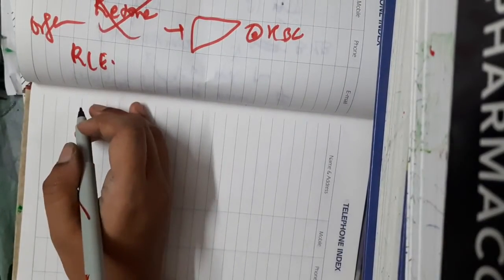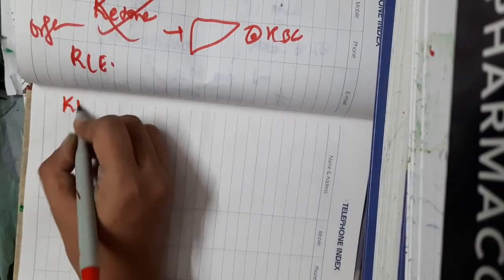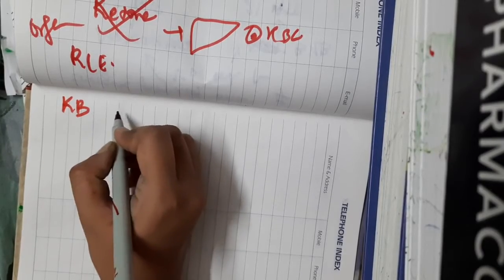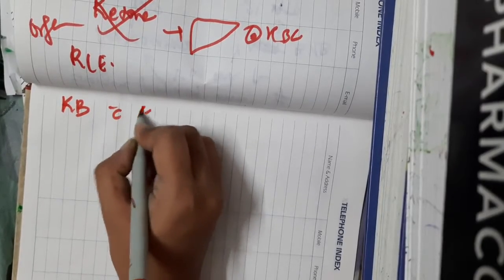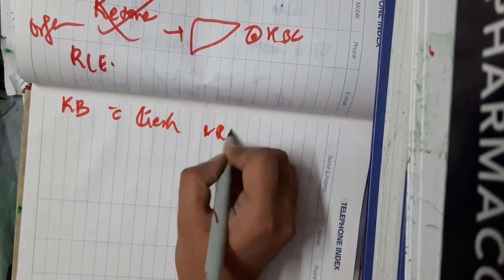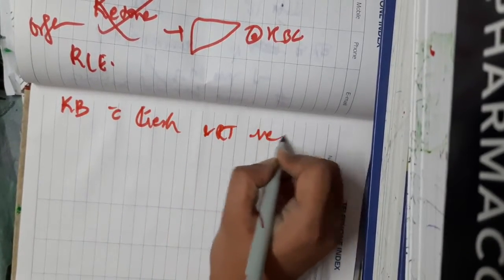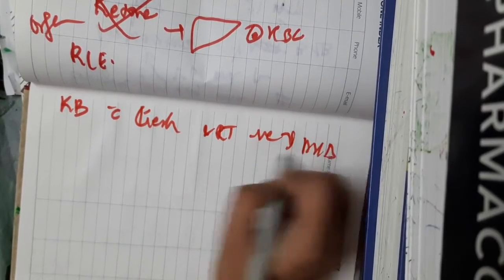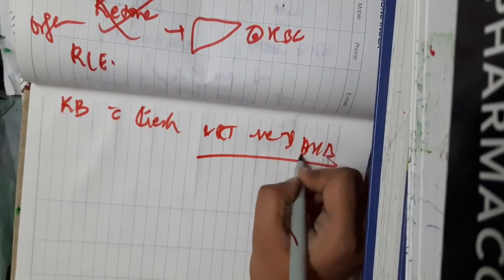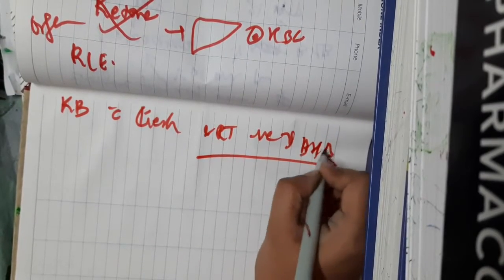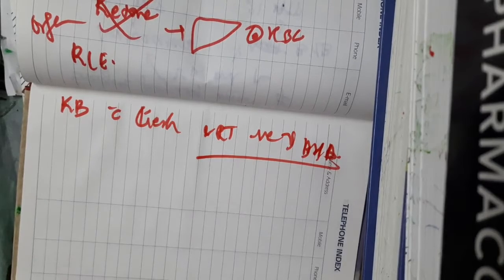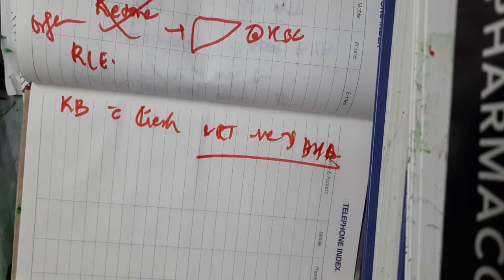If asked which ketone body has both Gerhardt's and Rothera's tests negative, that is beta-hydroxybutyrate — both Gerhardt's and Rothera's tests are negative for it. That covers everything about ketone bodies. Thank you for watching.